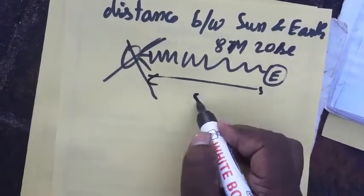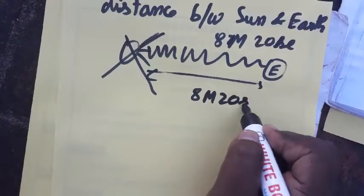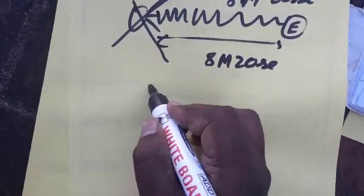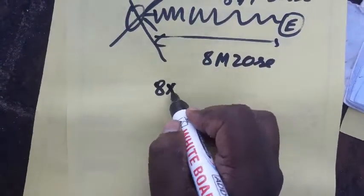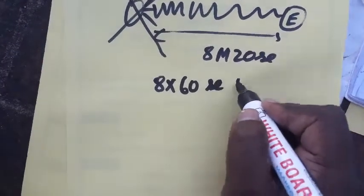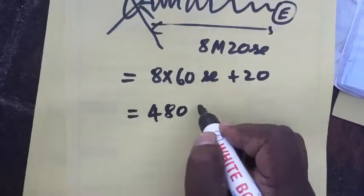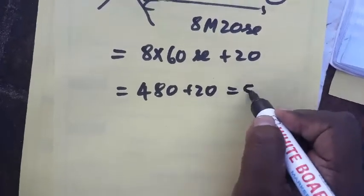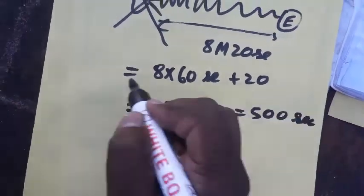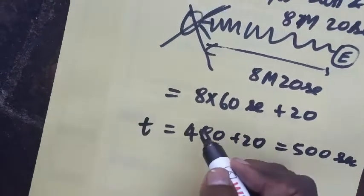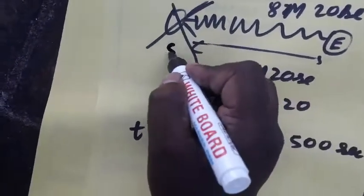So 8 minutes 20 seconds, we have 8 into 60 seconds plus 20 seconds. Actually it's 480 plus 20, we are getting 500 seconds. So the light will take 500 seconds to reach from sun to earth.